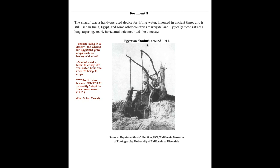Our last document, the Egyptian Shaduf. Even though the Egyptians lived in a desert climate, the Shaduf allowed them to grow crops like barley and wheat. It was made using a lever to easily lift water from the river up to the land so they could bring water to their crops. I noticed the date was 1911 and it's a photograph, so I made a note to myself that I could use this document to show that humans continue to modify or adapt to their environment — this will be my document three for the essay.